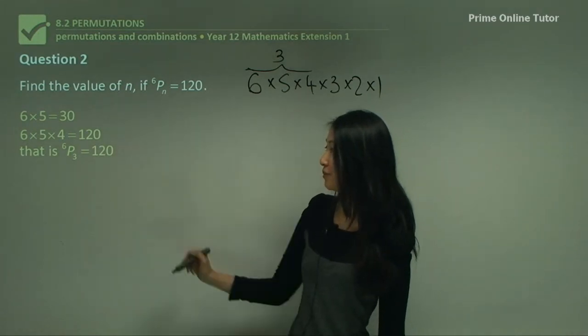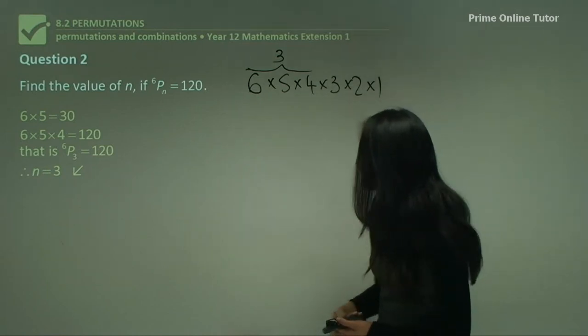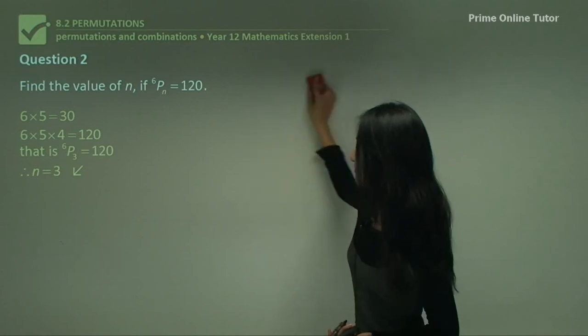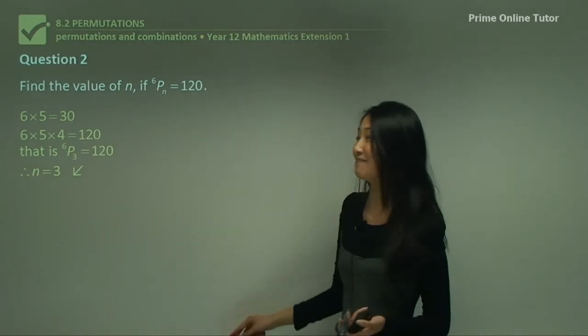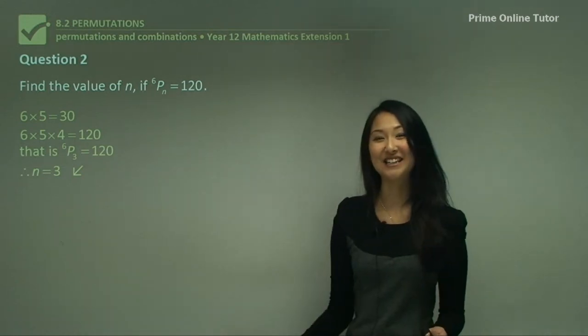If we're using the first three numbers, that means r here, or n in this case, must equal 3. Therefore, since ⁶P₃ = 120, n equals 3. So in this one, you couldn't have worked this out if you didn't understand the basic principle of what the permutation actually means. Now you know when you see this P what it's actually referring to.